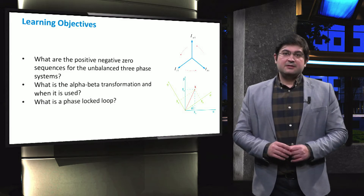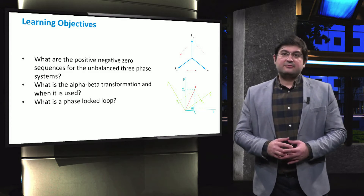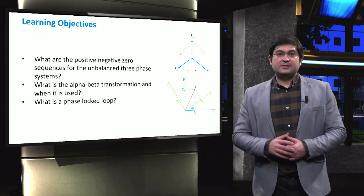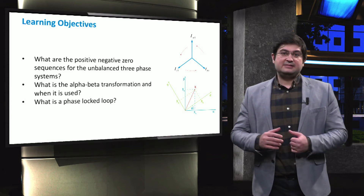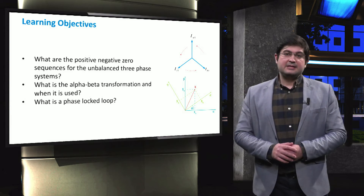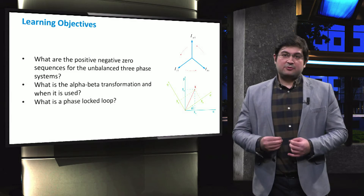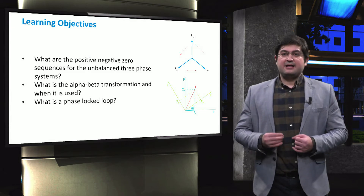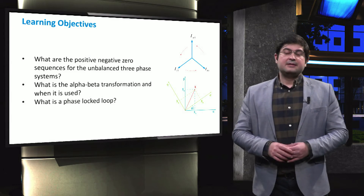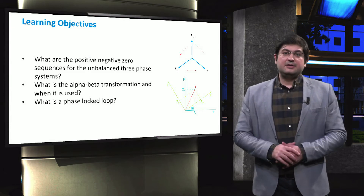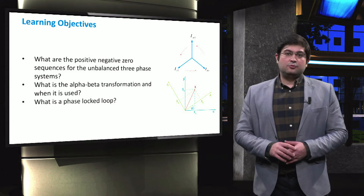Firstly, what are the positive, negative, and zero sequences for the unbalanced 3-phase systems? Secondly, what is the alpha-beta transformation and when is it used? Thirdly, what is the phase-locked loop?